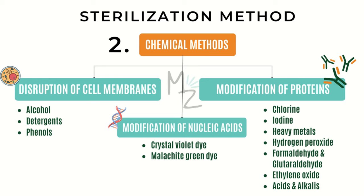Ethanol is widely used to clean the skin before immunization or venipuncture. It acts mainly by disorganizing the lipid structure in membranes but also denatures proteins. Ethanol requires the presence of water for maximal activity, and 70% ethanol is often used as an antiseptic to clean the skin prior to any puncture.